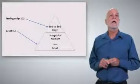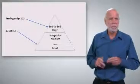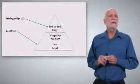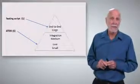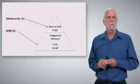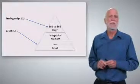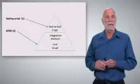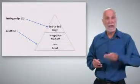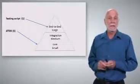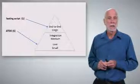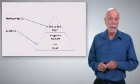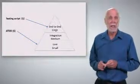So where does this put us on our testing triangle? This is a testing triangle, a pyramid, end to end at the top or what Google calls large test, unit tests at the bottom or Google small test, and integration or medium test in the middle. So the testing script is up at the top. It's a UI test. It's a little fragile because it depends on customers and items being in inventory at particular prices. The ATDD tests that we just did are at the bottom. They are quick, efficient, and very little dependency on anything.